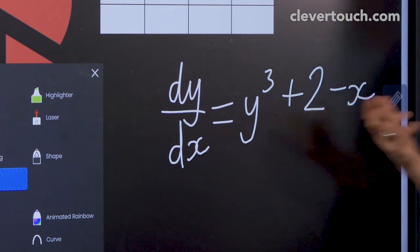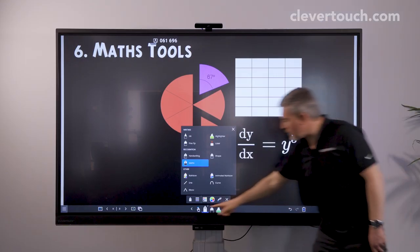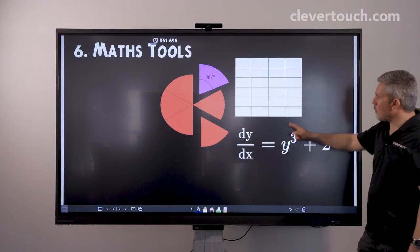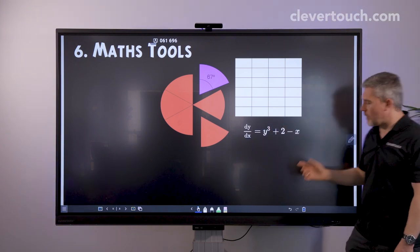And it will basically convert your handwriting into mathematical symbols. That is an image so I would be able to select that and move it around and shrink it down and do whatever I need to with it.